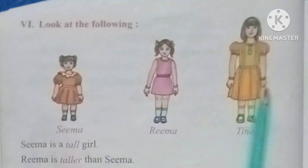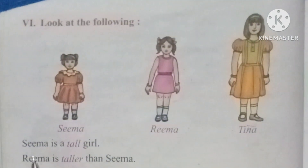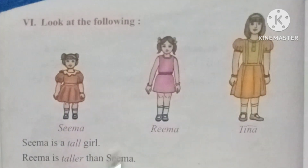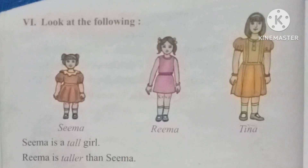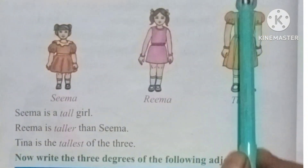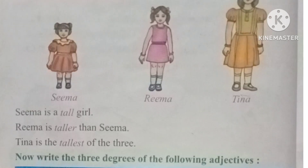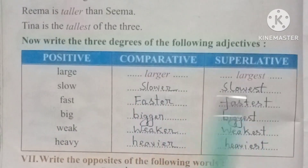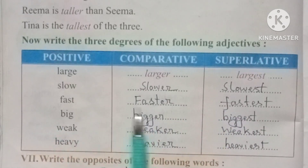Look at the following: Shima, Rima, Tina. Shima is a tall girl. Rima is taller than Shima. Tina is the tallest of the three. Now write the three degrees of the following adjectives: large — larger — largest, slow — slower — slowest, fast — faster — fastest.